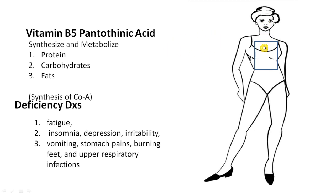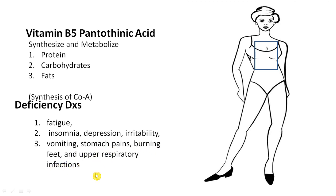Vitamin B5 is Pantothenic acid. Coming down to the stomach area: it helps in the metabolism of proteins, carbohydrates, and fats, and in the synthesis of Coenzyme A. Its deficiency causes fatigue, insomnia, depression, irritability, vomiting, stomach pains, burning feet, and upper respiratory infections.